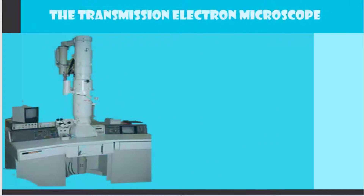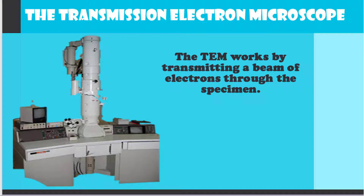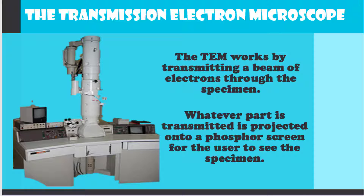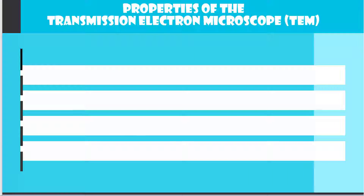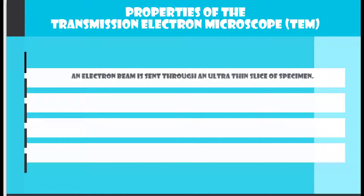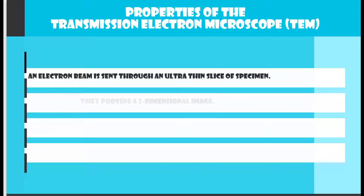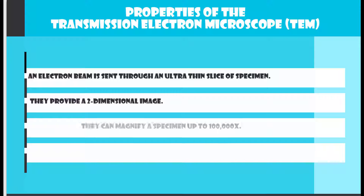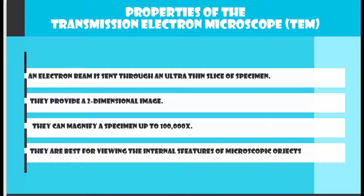The transmission electron microscope or TEM works by transmitting a beam of electrons through the specimen. Whatever part is transmitted is projected onto a phosphor screen for the user to see the specimen. The properties of the TEM are: an electron beam is sent through an ultra-thin slice of a specimen, they provide a two-dimensional image, they can magnify a specimen up to 100,000 times, and they are best for viewing the internal features of microscopic objects.